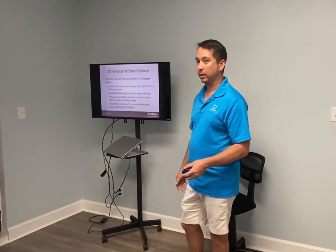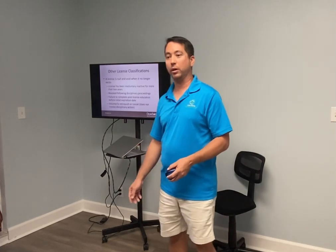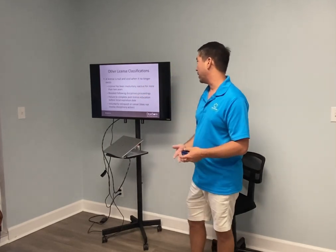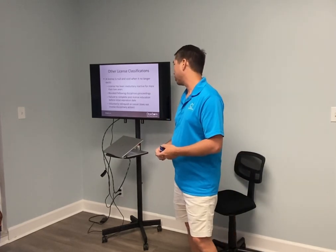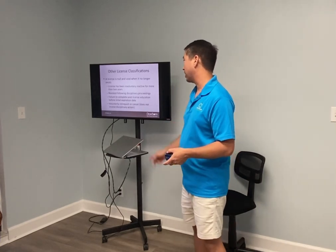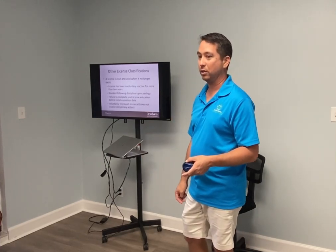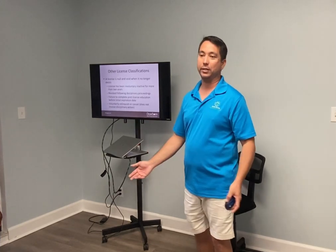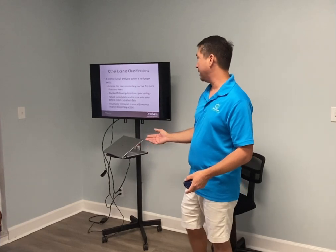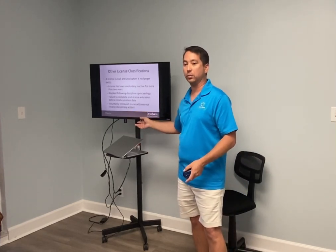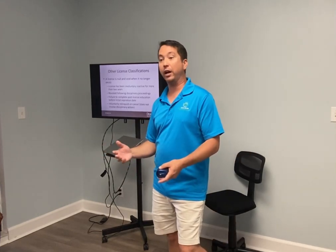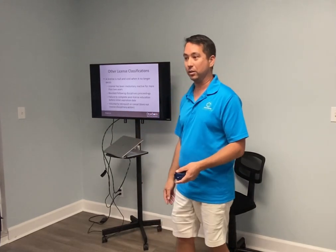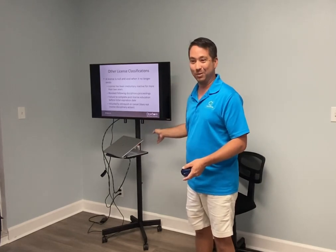If you waited from March to September it's definitely not going to happen — if she was going to do it she'd have to act within the next week or two. I told her it's easier to just get your license again — pay the fees, pass the test, and move on. Null and void means the license no longer exists. Causes include: involuntarily inactive for more than two years, revoked following disciplinary proceedings, failure to complete post-licensing education before initial license expiration, or voluntarily relinquishing your license.